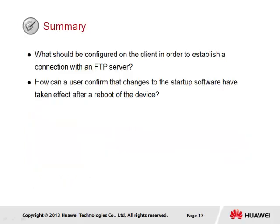In summary, we have a couple of review questions. First: what should be configured on the client in order to establish a connection to an FTP server? The client must be able to reach the FTP server over IP, and therefore have a valid path to the FTP server — meaning an IP address must be configured on the interface by which the FTP server is reached. Second: how can a user confirm that changes to the startup software have taken effect after a reboot? By using the command display startup, we can confirm that the new image has been applied and is currently active, identified by the .cc extension. This image should also be seen as part of the device startup process, as covered in the navigating the CLI section.